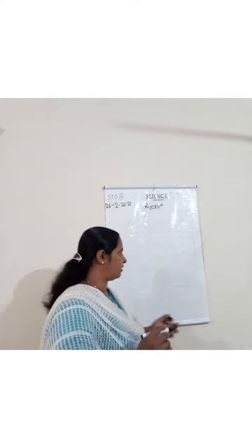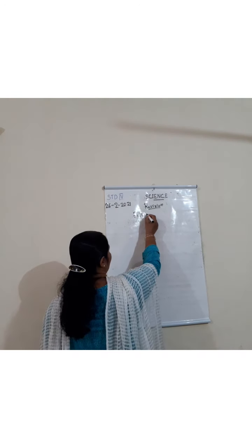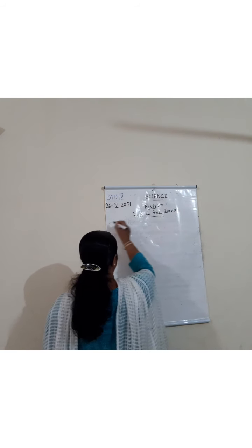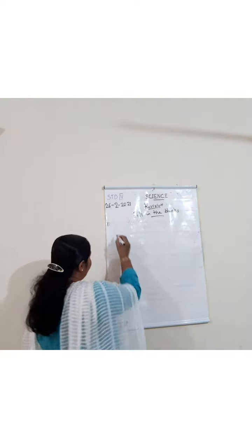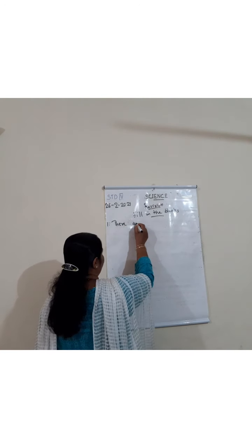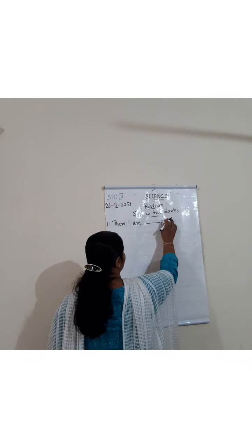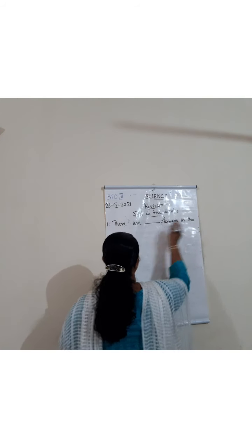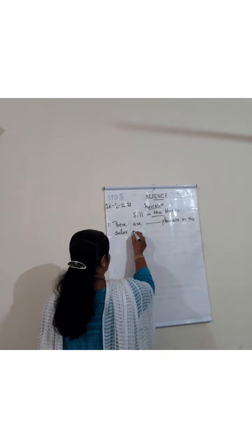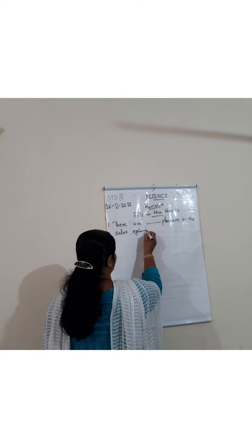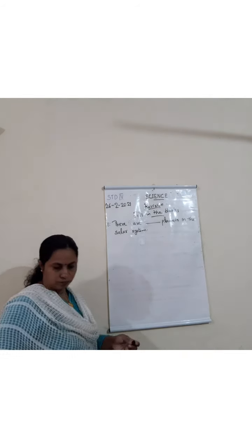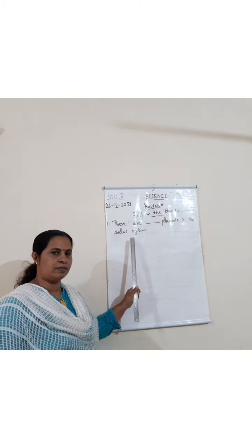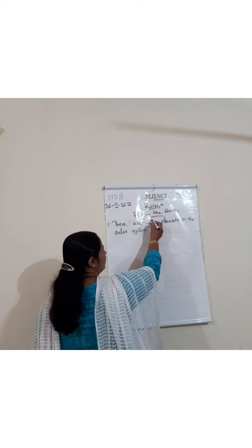Fill in the blanks. Question number one: There are dash planets in the solar system. How many planets are there in the solar system? The correct answer is eight.